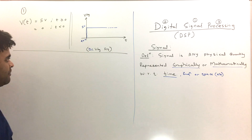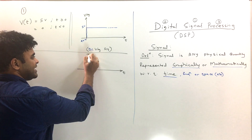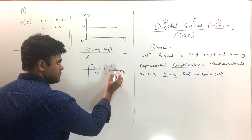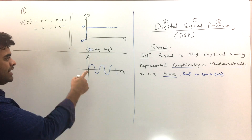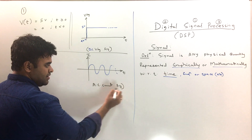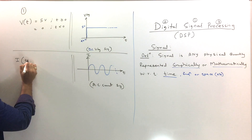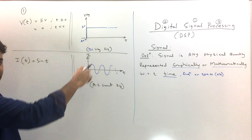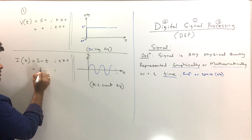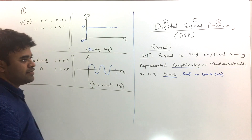Let me give you one more example. Suppose the horizontal axis is time and the vertical axis is current I. The signal looks like a sinusoidal wave — this is an alternating current signal, an AC current signal. Mathematically, this is written as i(t) = sin(t) for t ≥ 0, and 0 for t < 0. So the second example is a current signal.